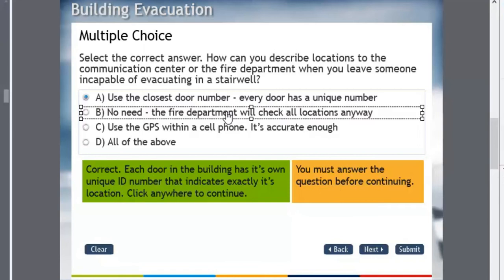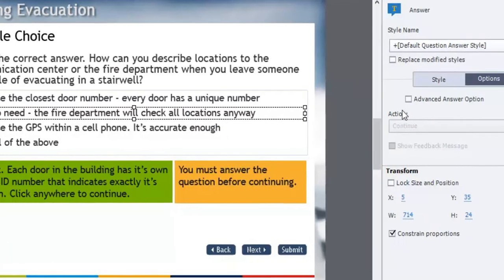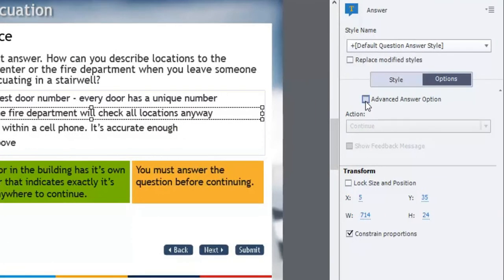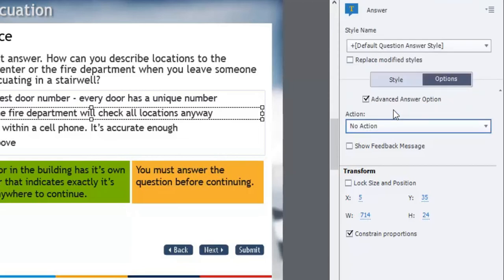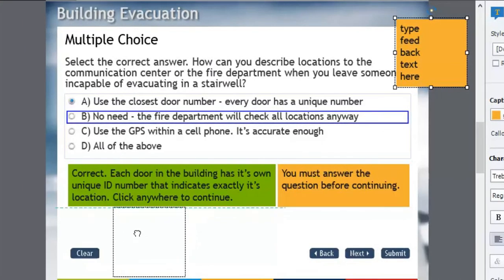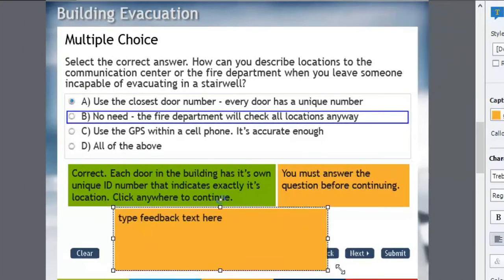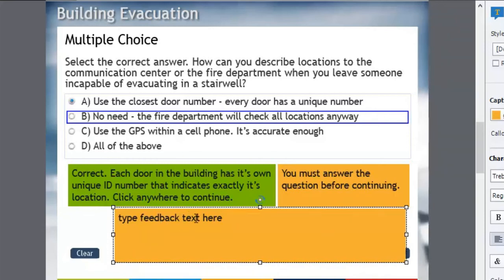Now here's the thing: I have my correct answer, but where's my wrong answer? Well, I'm actually going to create three wrong answers, one for each of the wrong answers that are available. So I've selected the second answer. I'm going to check off advanced answer option. The action is actually I don't want them to do anything, because I don't want them to leave this page. There's no action, but I will show a feedback message, and that feedback message will be specific as I write it for this answer.